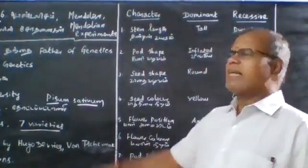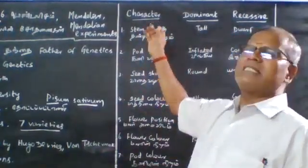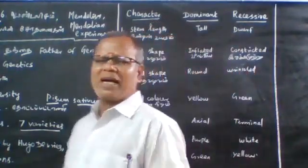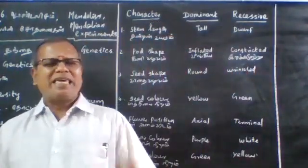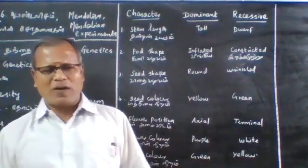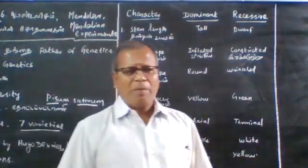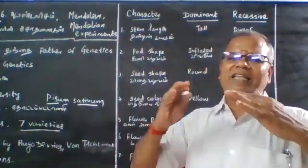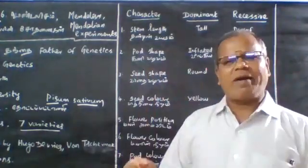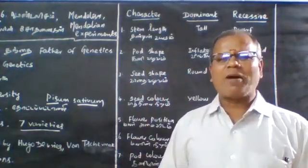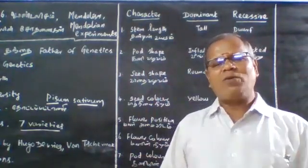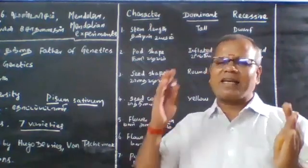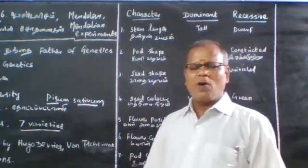He selected seven varieties for the experiment. According to Mendel, the characters are expressed in two ways: one is the dominant character, and another is the recessive character.